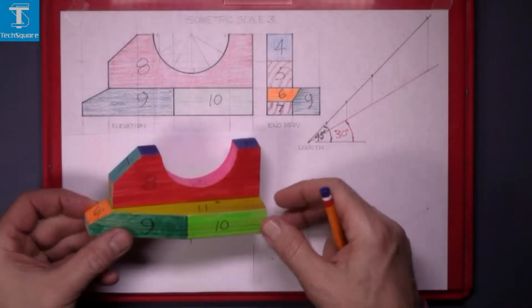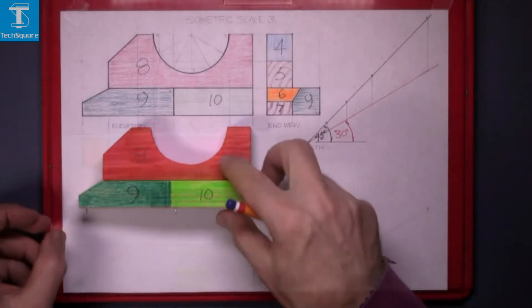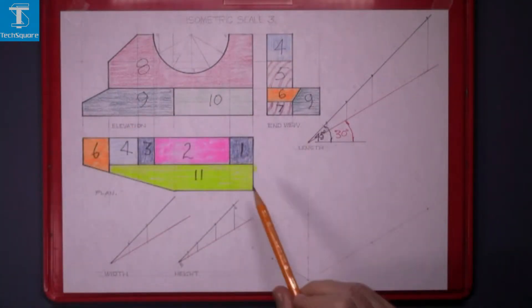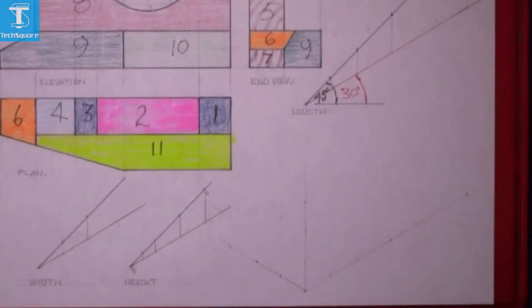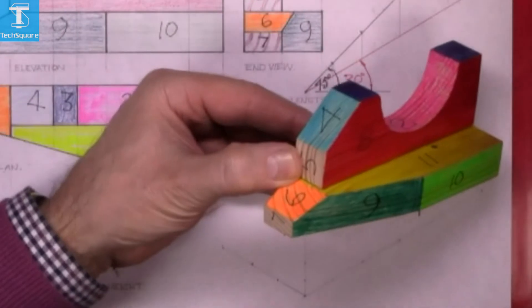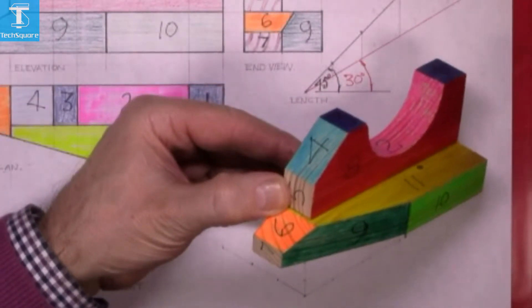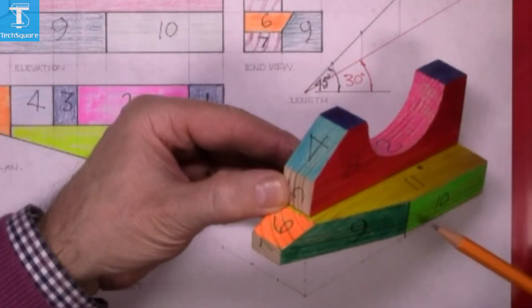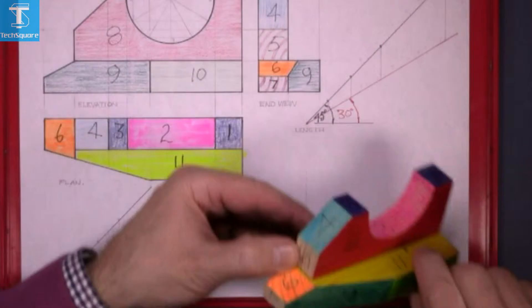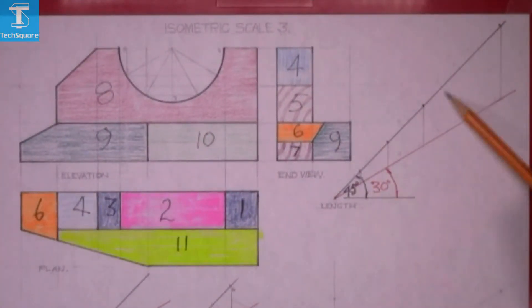You cannot see the rest of it in that position. The question is to draw the isometric to the isometric scale. This is the view you are going to see in isometric. You'll see all the surfaces that are numbered. So to get that, I set up the isometric scale at 30 and 45 degrees.